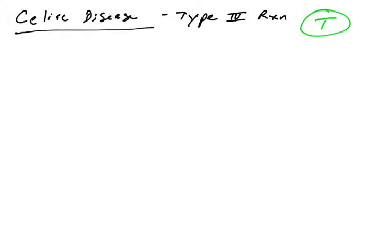Let's talk about a type 4 hypersensitivity reaction that causes the disease known as celiac disease. So a type 4 reaction, if you recall, primarily involves T cells inducing inflammation and damage to organs and tissues.